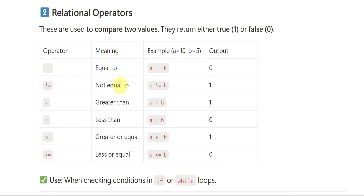When you give exclamatory mark followed by equals (!=), it means not equals to. A is not equals to B — yes, both are different, so it is true. A is greater than B — yes, A is greater because it is 10 and B is only 5, so the result is 1. Less than gives 0, which is false.